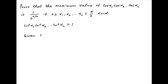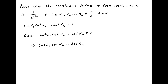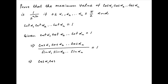We are given that cot(α₁) · cot(α₂) · ... · cot(αₙ) = 1. Therefore, cos(α₁) · cos(α₂) · ... · cos(αₙ) divided by sin(α₁) · sin(α₂) · ... · sin(αₙ) is equal to 1. This implies that cos(α₁) · cos(α₂) · ... · cos(αₙ) = sin(α₁) · sin(α₂) · ... · sin(αₙ).